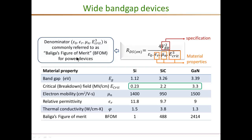The Baliga figure of merit is commonly used to determine the benefits and impact of semiconductor material, especially on the on-state resistance. It is given as the product of permittivity, electron mobility, and the cube of the critical breakdown field. Because of the higher critical electric field, silicon carbide as well as gallium nitride are significantly better than silicon's figure of merit — silicon carbide is about 500 times better, and gallium nitride is even higher, about five times higher than silicon carbide. This demonstrates the potential of these two wide bandgap devices for power converter switches.